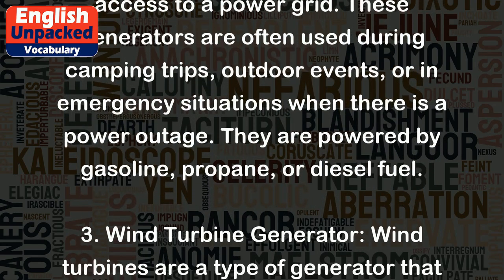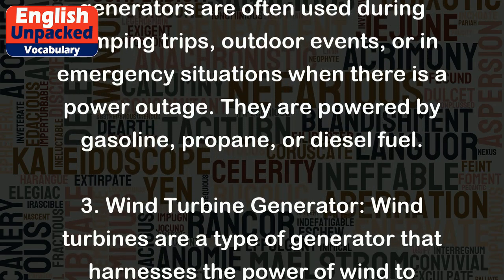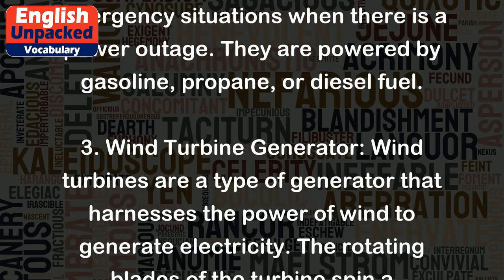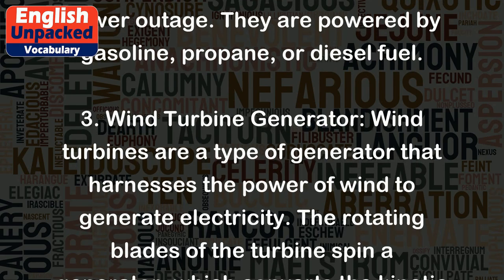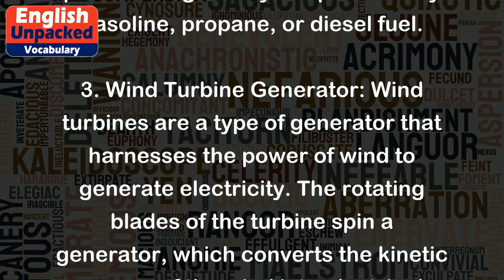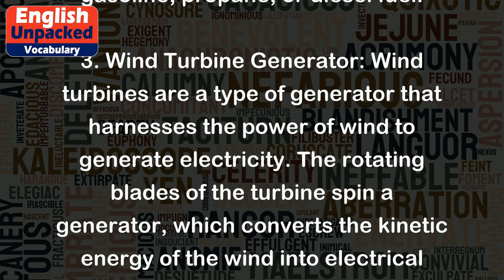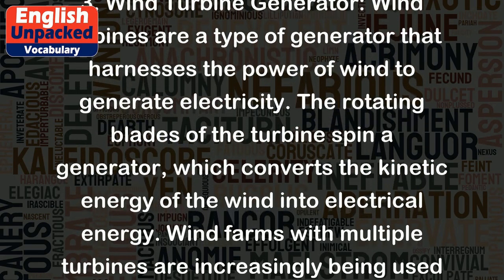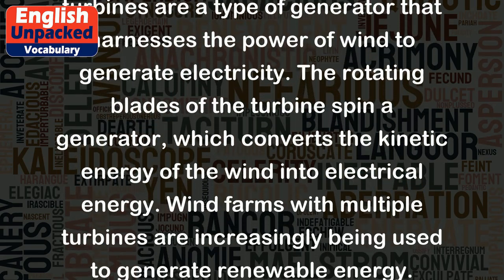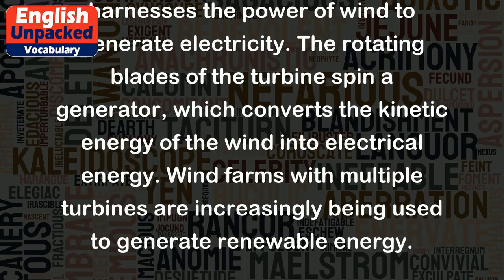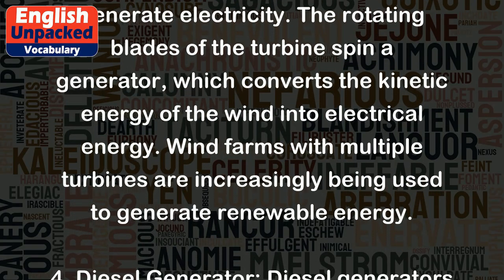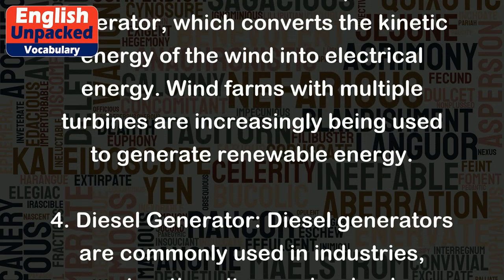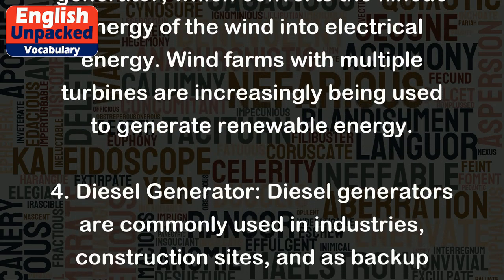They are powered by gasoline, propane, or diesel fuel. Wind turbines are a type of generator that harnesses the power of wind to generate electricity. The rotating blades of the turbine spin a generator, which converts the kinetic energy of the wind into electrical energy. Wind farms with multiple turbines are increasingly being used to generate renewable energy.